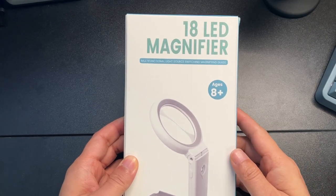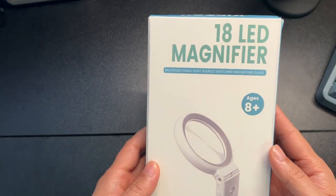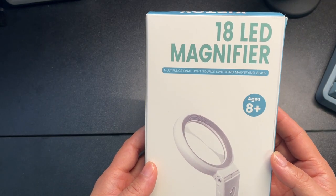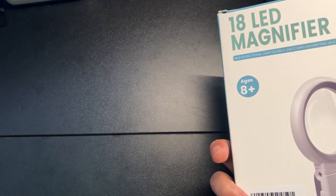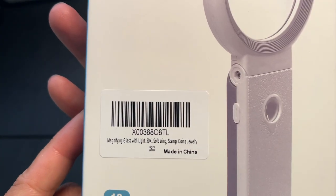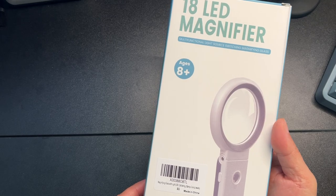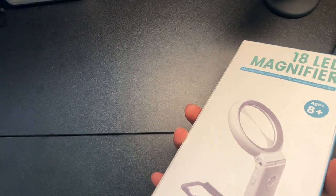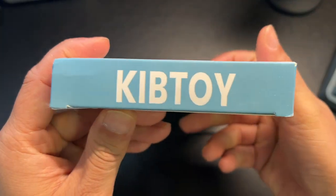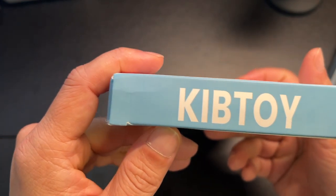Hey, how's it going? Today we're unboxing this magnifier. It's an 18 LED magnifier. Here's the barcode. It does 10x and 30x magnification. Alright, let's unbox this. The brand is called Kib Toy.